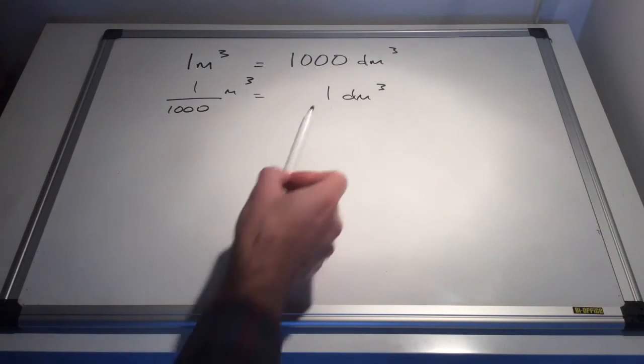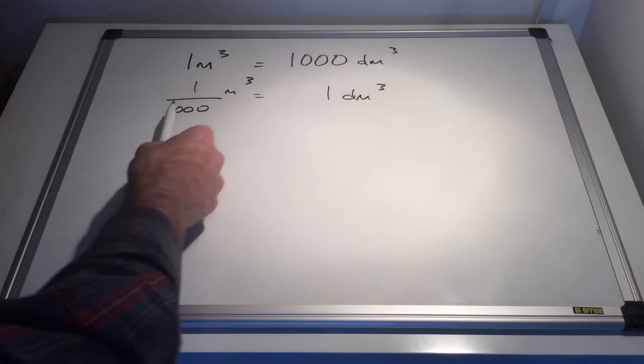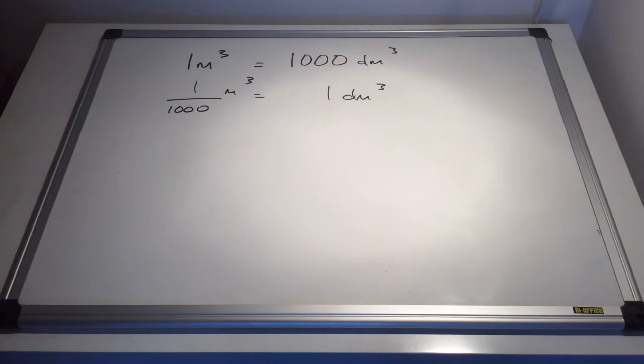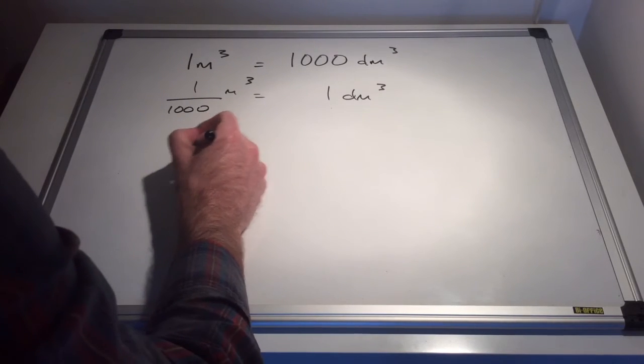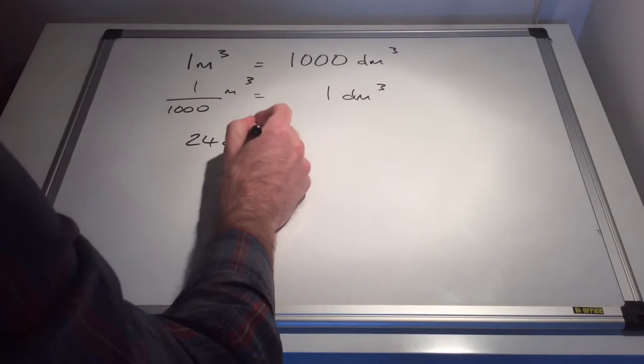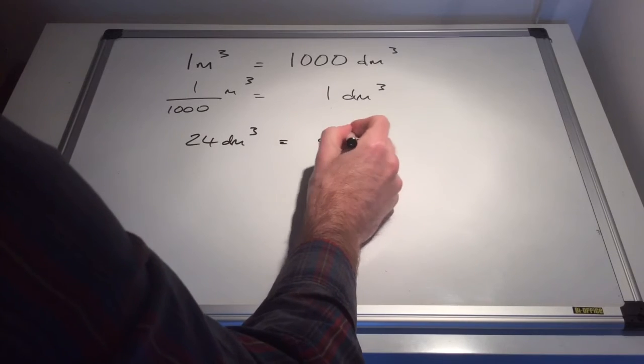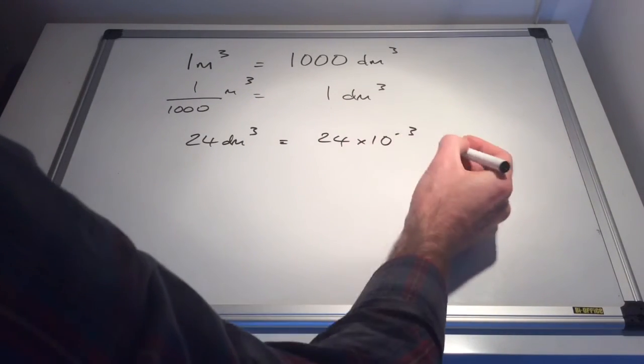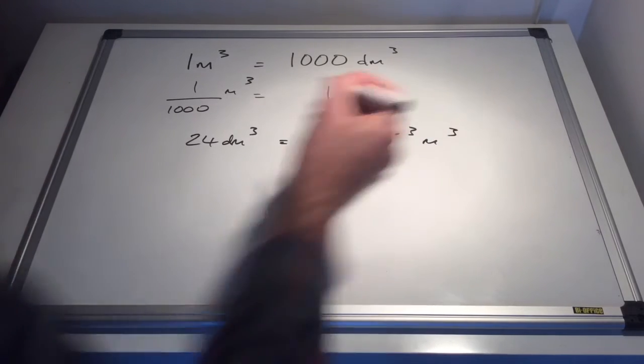So whatever you've got in decimetres cubed, you divide by 1000 to get it into cubic metres. And the way I do that is I just put a 10 to the minus 3 after whatever the cubic decimetres is. So 24 dm cubed is 24, now the conversion, times 10 to the minus 3 cubic metres.